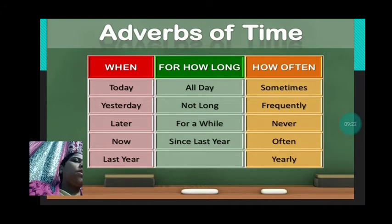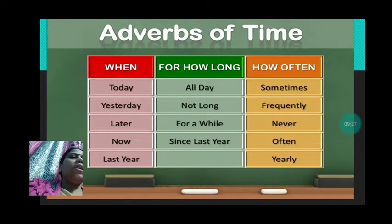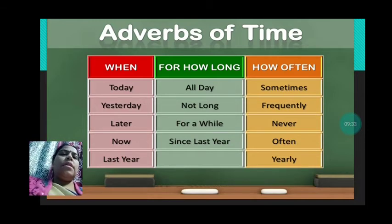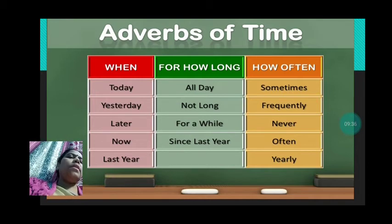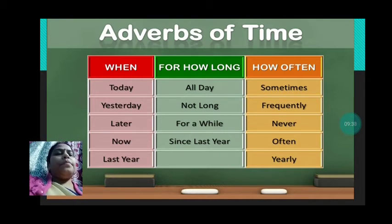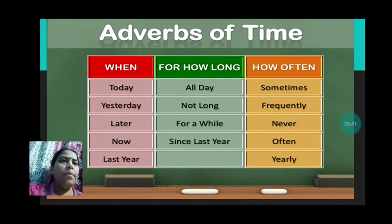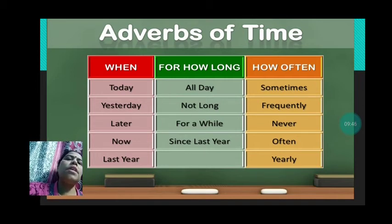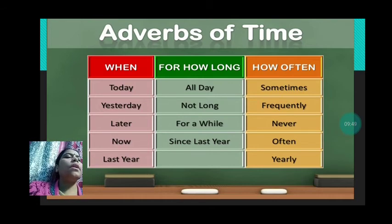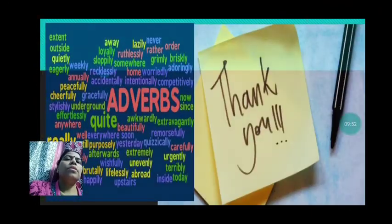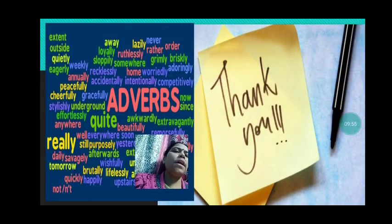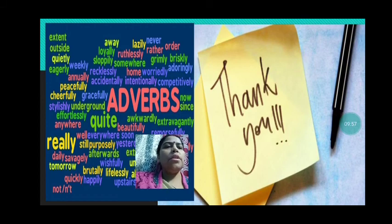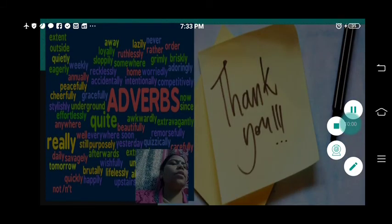For example: 'I go there sometimes' or 'I visit my friend's house sometimes.' 'I come here frequently.' 'I will never go there.' 'My friend comes to my home often.' You can make this type of sentences and understand these are the adverbs of time. So thank you children. You will learn all the adverbs properly and do your homework nicely. Goodbye, take care and revise for your exam properly.